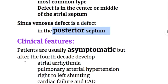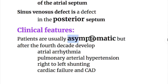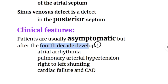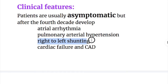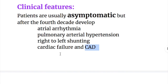The clinical features of atrial septal defect: patients are usually asymptomatic, but after the fourth decade may develop atrial arrhythmia, pulmonary hypertension, right to left shunting which causes cyanosis, cardiac failure, and coronary artery disease.